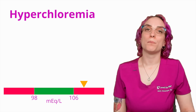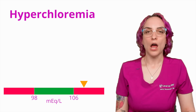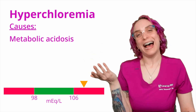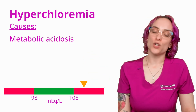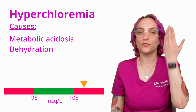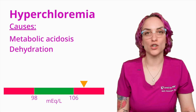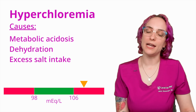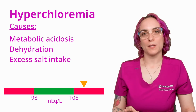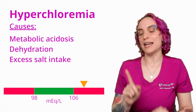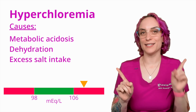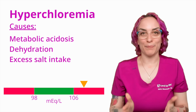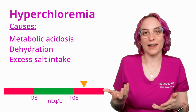Now, hyperchloremia, where we're talking about being above 106 mEq/L. What are some possible causes here? Metabolic alkalosis can cause hypochloremia, but metabolic acidosis can cause hyperchloremia. We can also have dehydration — if you don't have enough fluid, your electrolytes are going to appear to be more elevated than usual because they're not being diluted by that fluid in the intravascular space. And then excess salt intake. Salt is sodium — it's actually sodium chloride, NaCl. They're together as table salt, and in your body they dissociate into their separate ions, so you now have an increase in chloride as well as sodium.